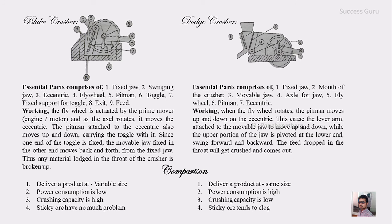So this is the difference between the Blake crusher and the Dodge crusher. Both are jaw crushers but differ in the position of the exit and related features. If you still have any doubt you can ask me in class. To summarize what we have seen: the process involved in ore dressing, as well as the crushers — especially the Blake and Dodge type of jaw crushers — how they work, what their parts are, and the differences between the two. Thank you.